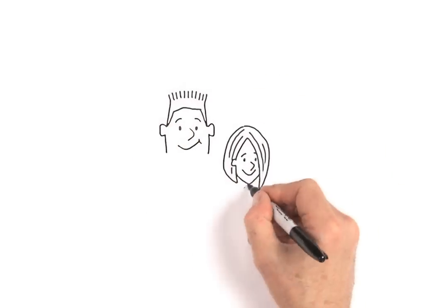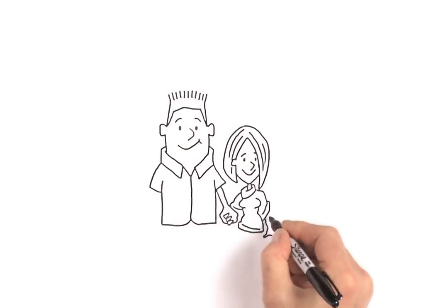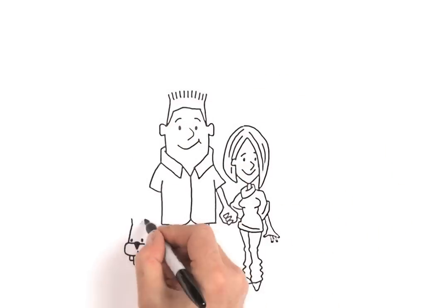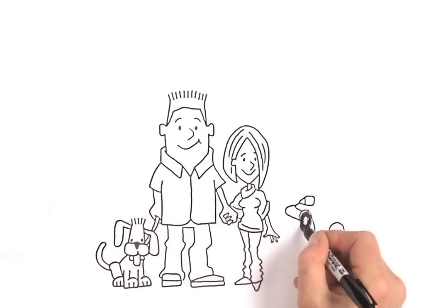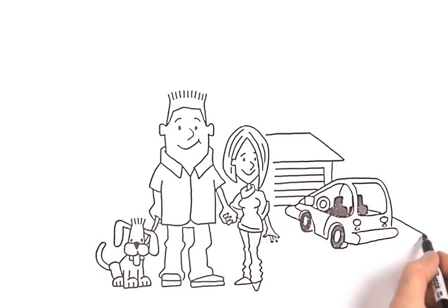Steve and Ellen have been married for three years and are thinking about having kids. Their parents have told them that they should look at getting life and disability insurance. They've been avoiding it.